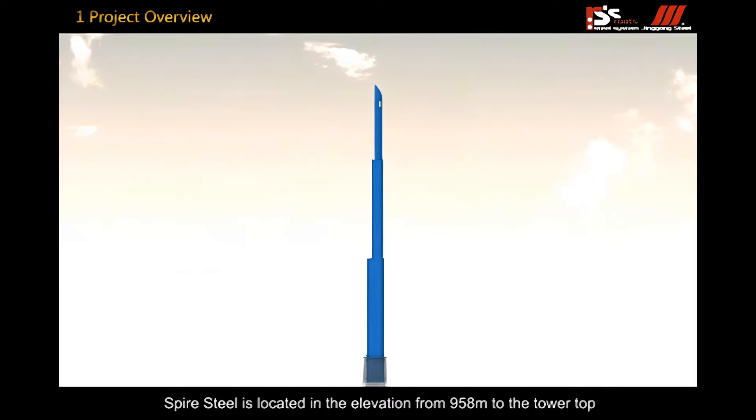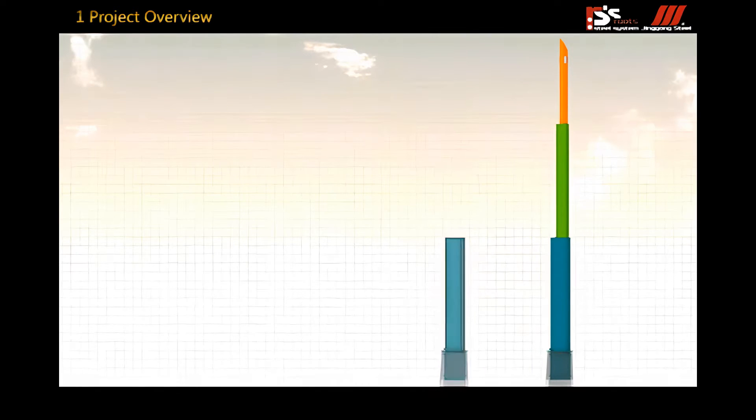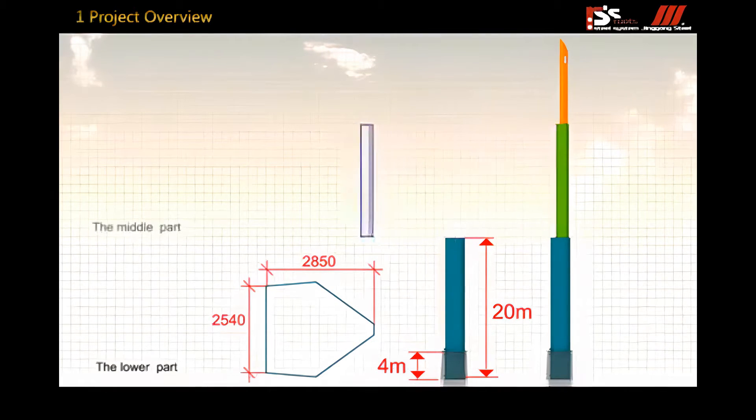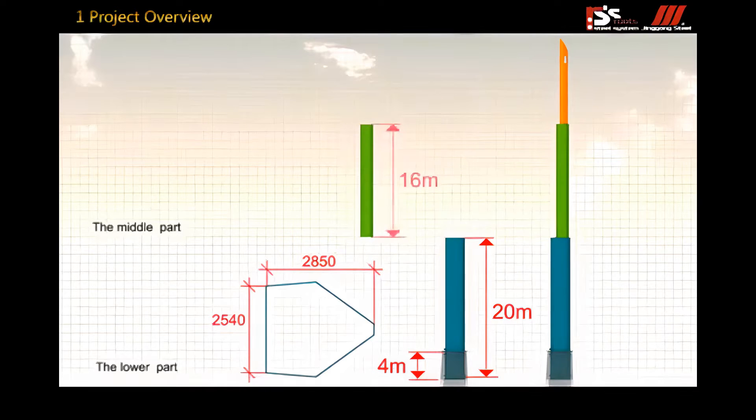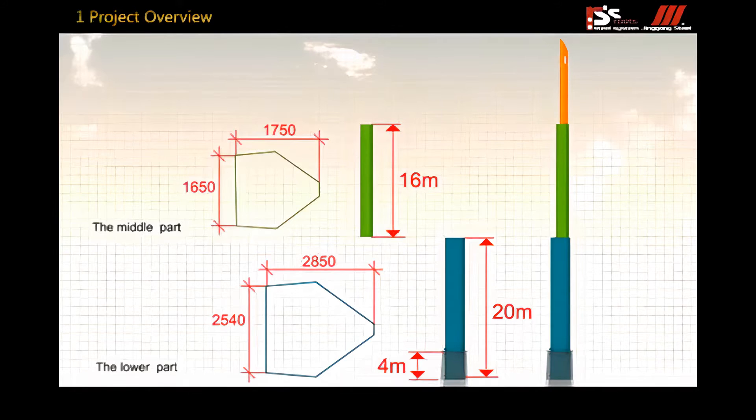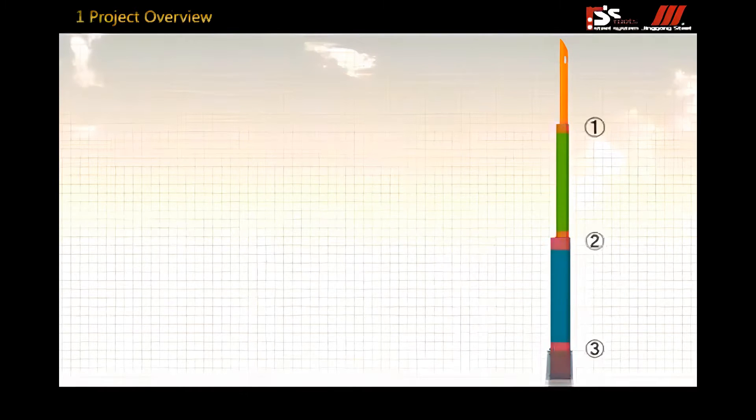Spire steel is located in elevation from 958 meters to the tower top with a total length of 48 meters. It is composed of three parts and connects with bolted end plate.